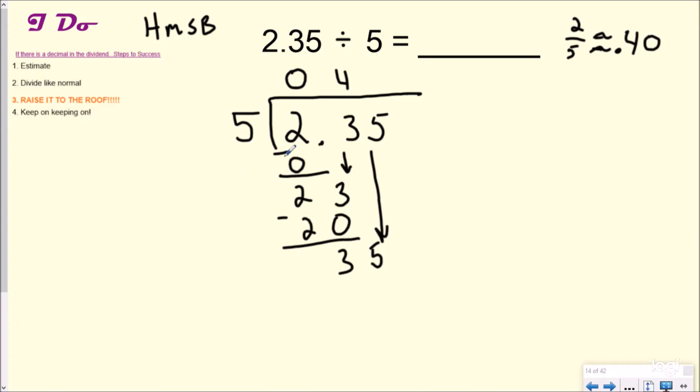So now how many groups of 5 go into 35? Obviously, the answer that is 7. So 5 times 7 is 35. We're going to subtract and get a zero. However, my estimate was not 47. My estimate was 0.40, which means I did something wrong. Well, I forgot step three, which is if it's in the dividend, you raise it to the roof. So if you just bring this decimal straight up, your answer now becomes 0.47.